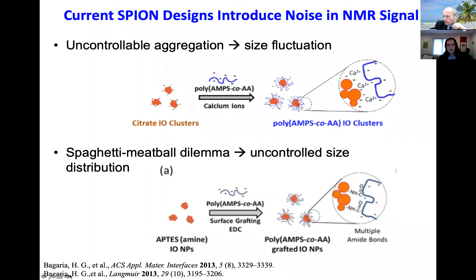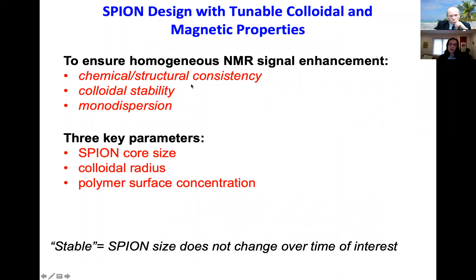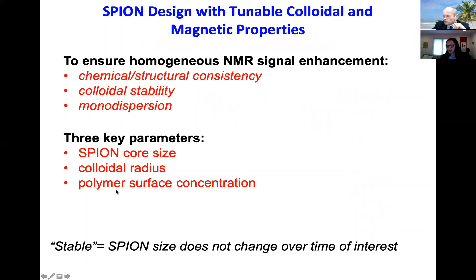We really wanted to address having singly modified nanoparticles with chemical structural consistency. Because when you get the NMR signal from downhole and want to distinguish between chemical components of the oil, you need to get around background noise and unwanted aggregation signal. Colloidal stability is really important. Monodispersity boils down to three areas: the core size of the nanoparticle, the colloidal radius, and the polymer surface concentration.